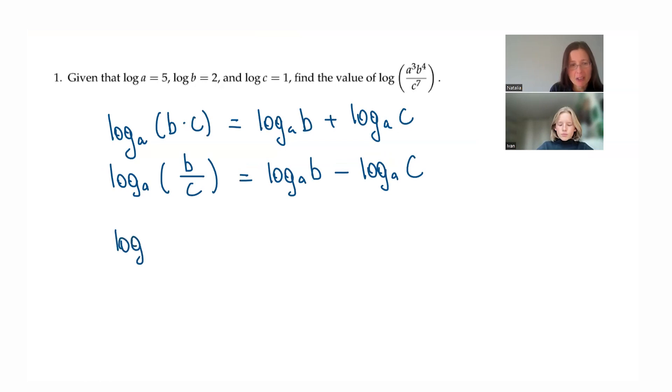And one more that we will need here. If we have logarithm base A of B to some power C, we can simplify it a bit. Just like, for example, we have logarithm base A of 25 that we already did. And we knew that it was 2. Now I'm going to add some power to 25. So it will be logarithm base A of 25 to the power of 7. Let's figure out what that would be. And particularly, we're interested in how it relates to the original one. Yeah.